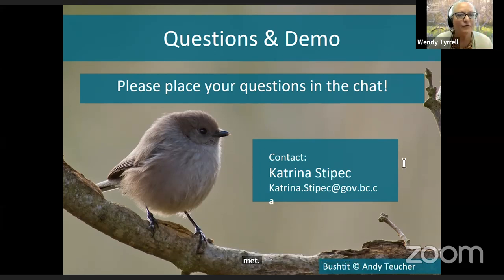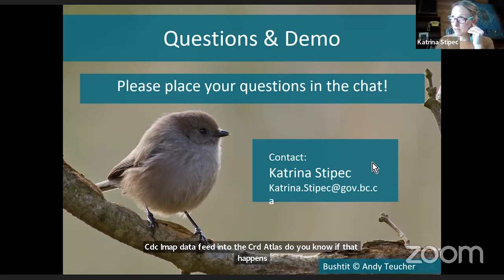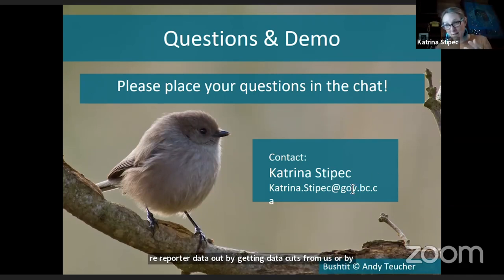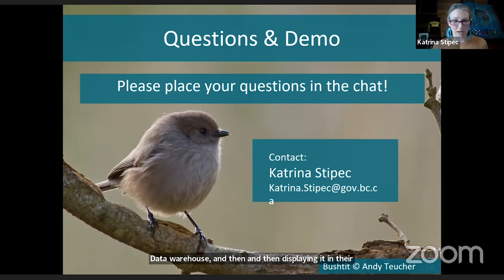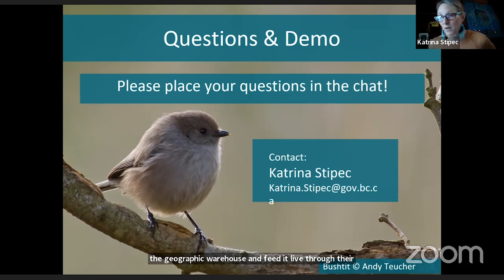A question from Amy: does the CDC IMAP data feed into the CRD Atlas? I haven't checked on that in a long time, but I know that it did. Some applications report our data out by getting data cuts from us or by downloading the data regularly from the BC data warehouse and then displaying it in their own applications. It's very possible that CRD uses our web map services, which allows them to link directly to the data from the geographic warehouse and feed it live through theirs. I don't know the current answer to whether they're doing that right now.